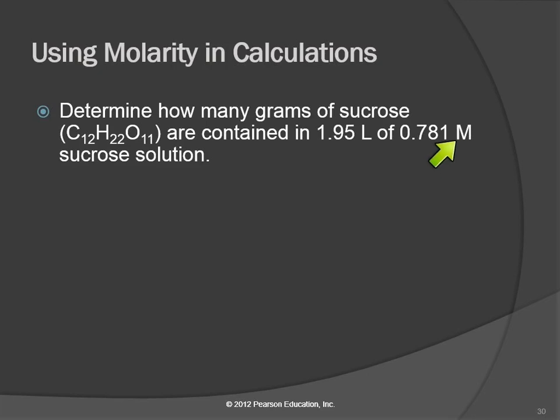Anytime you see this capital M, when you write it down on your paper, write it down as the fraction: 0.781 moles over liters. Because otherwise you're going to mess it up. You're going to forget that this is a per unit that is a conversion factor. So always write it down as moles over liters. And so we've got that number, we've got this guy here, and they're asking us for how many grams. We usually start with the number that just has a single unit. So we're starting with the 1.95 liters.